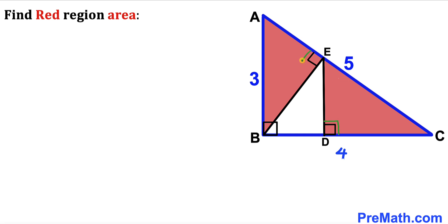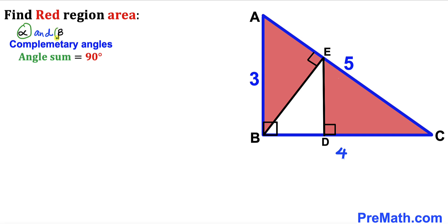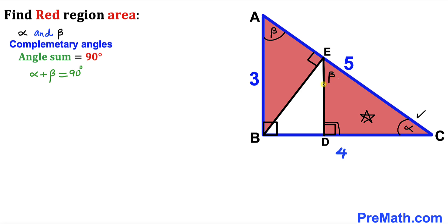Now let's make an observation: this angle is 90 degrees and this angle is 90 degrees as well, giving us two red right triangles and one white right triangle. Let's assume that alpha and beta are two complementary angles — meaning their sum equals 90 degrees. In triangle ABC, this angle is alpha, the right angle is 90 degrees, so the remaining angle is beta. In triangle CDE, this angle is alpha, this is 90 degrees, so this angle is beta. In triangle BEA, this angle is beta and the remaining angle is alpha.